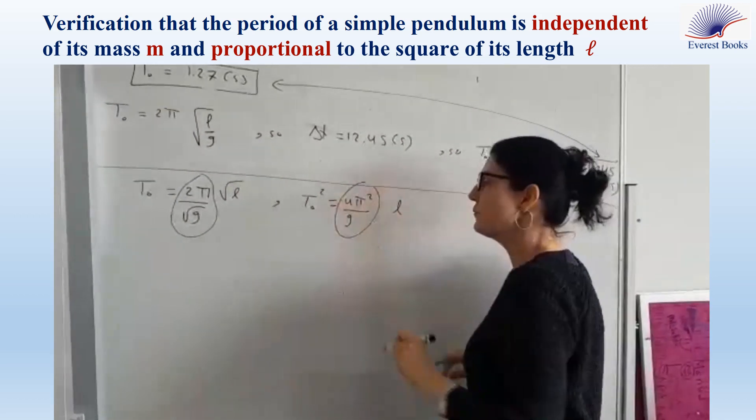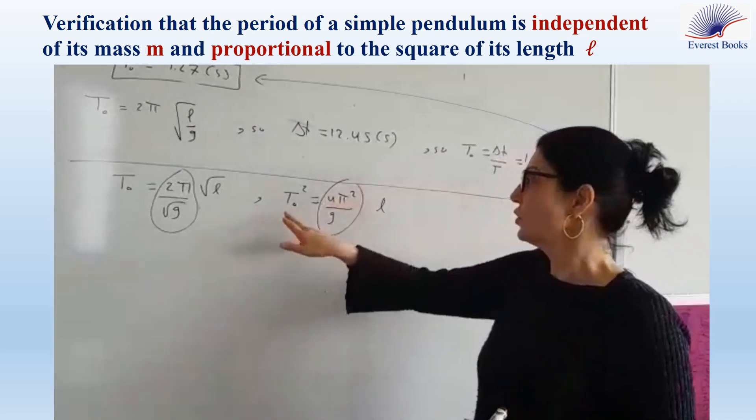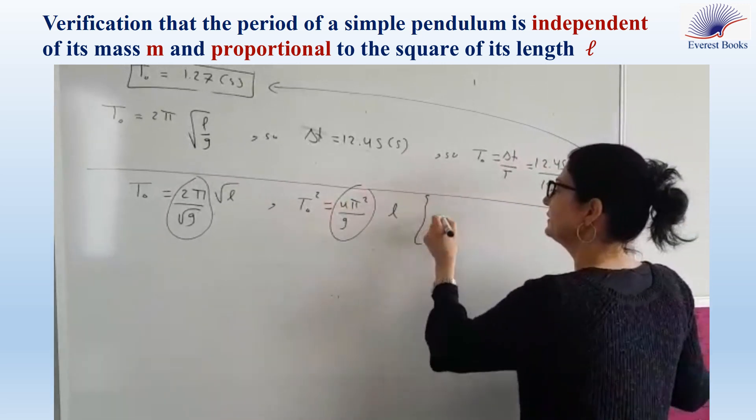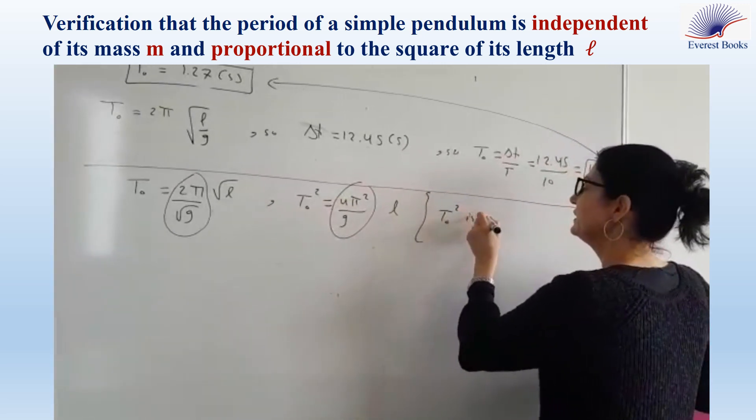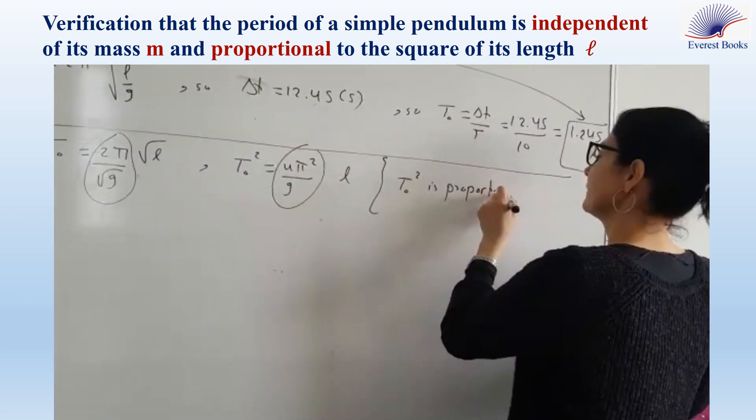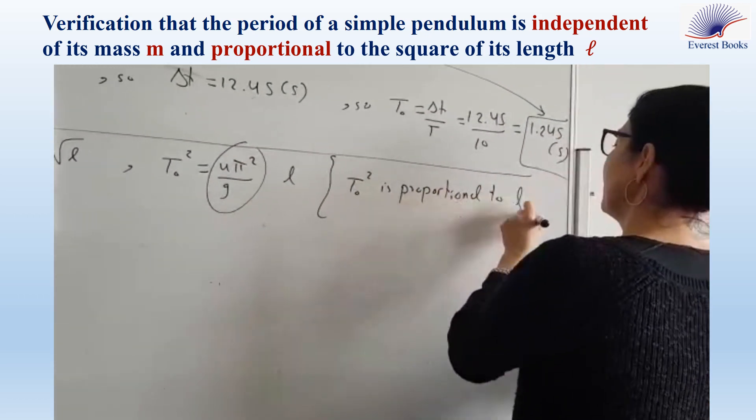T0 squared is equal to 4π² over g times L. Again, 4π² over g is constant, so T0 squared is directly proportional to L.